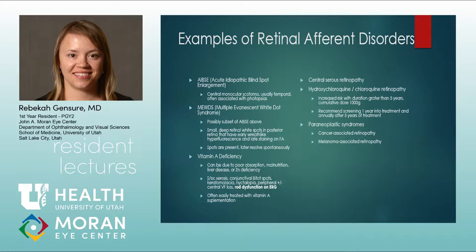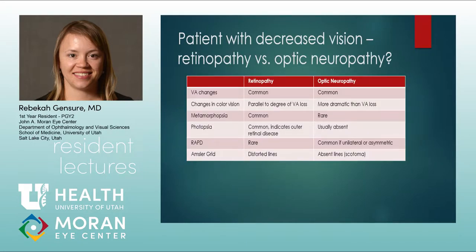Plaquenil screening recommendations: screen at one year into treatment, then annually once patients have been on treatment for five years — you don't need to screen every year in the early period. There are also paraneoplastic syndromes associated with retinopathy. In distinguishing retinal versus optic nerve problems: both cause vision changes, but color vision differs — with retinopathy, color vision loss parallels the degree of visual acuity loss, whereas optic neuropathy tends to cause a more dramatic change in color vision.